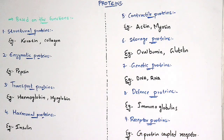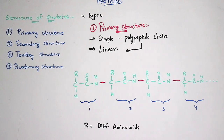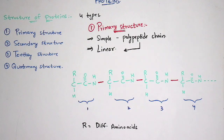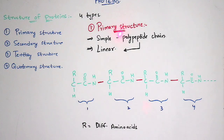Now let us discuss about the structure of proteins, which is very important. The structure of proteins is classified into four types: primary structure, secondary structure, tertiary structure, and quaternary structure. Let us discuss each structure.